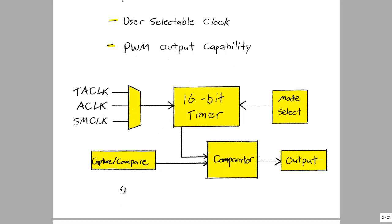So again, here's a very basic block diagram of what's going on inside the Timer A module. To find the full block diagram, refer to the user's guide of the MSP430. So again, we have a user selectable clock. This can either be the TACLK, which is specific to the 16-bit Timer A, the ACLK, or the SMCLK.